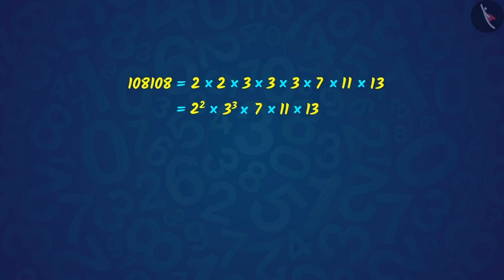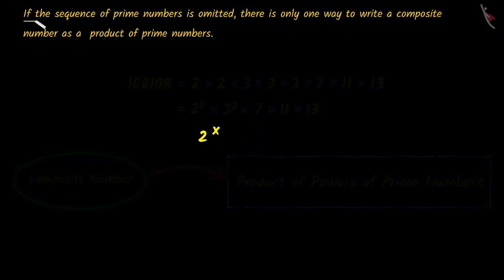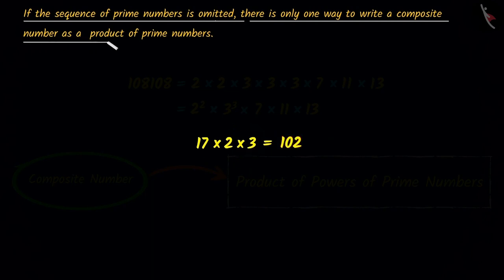Which is in the form of powers of prime numbers. What do you understand from this? From this we understand that every composite number can be written as the product of the powers of prime numbers. And if the sequence of prime numbers is not taken into consideration, then composite number can be written in the same method as the powers of the prime number.